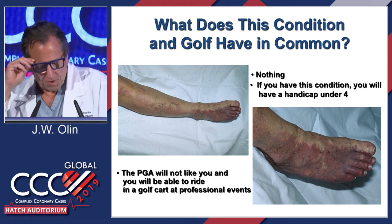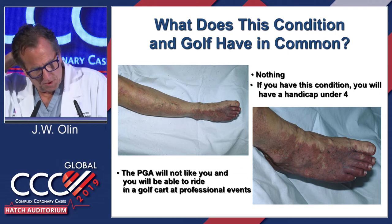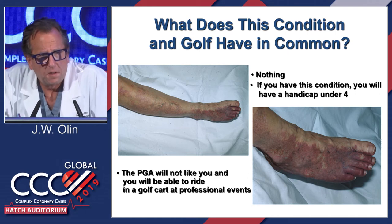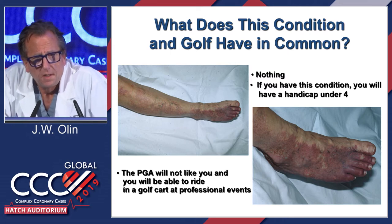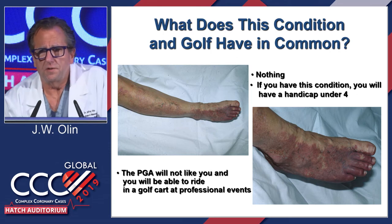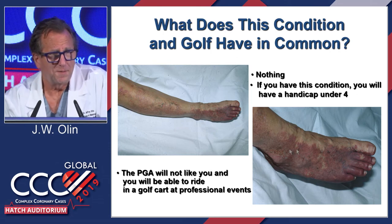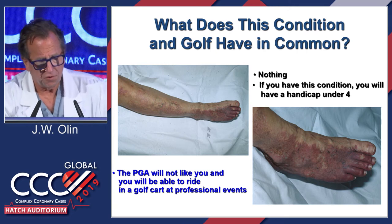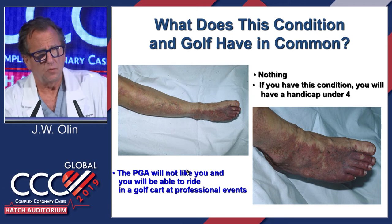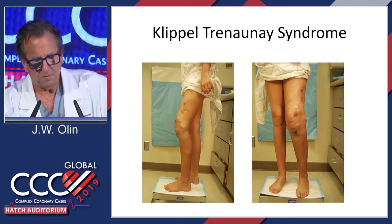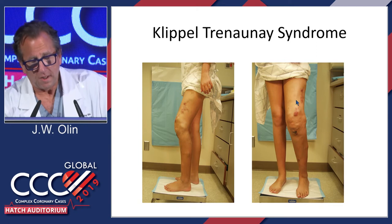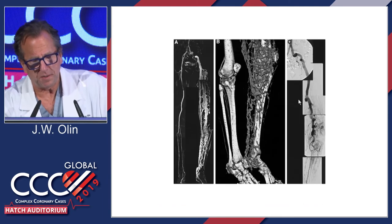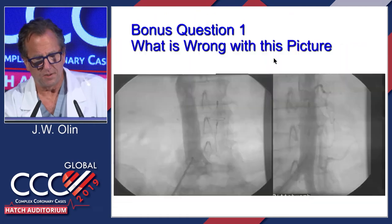What does this condition have in common with golf? Since the U.S. Open is going on, I thought this was appropriate. This is Klippel-Trenaunay syndrome. There was a professional golfer — Casey Martin — who sued the PGA because he wanted to ride in a golf cart due to this condition; it went to the Supreme Court and he won. Klippel-Trenaunay involves muscular hypertrophy of the legs, varicose veins, a port wine stain, and 50% have an AV malformation. Be very careful about doing venous ablation on these patients — they don't have a good deep system.